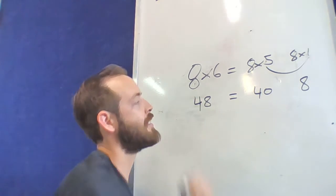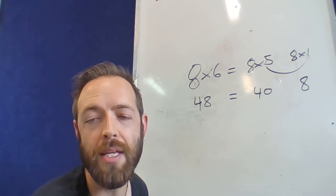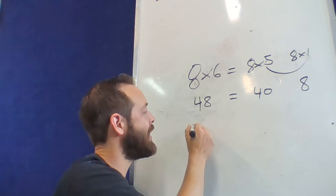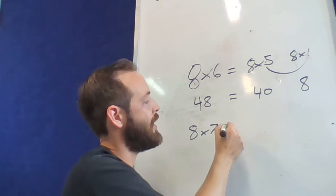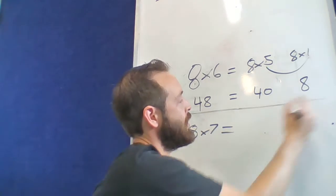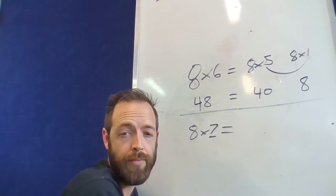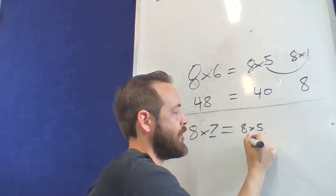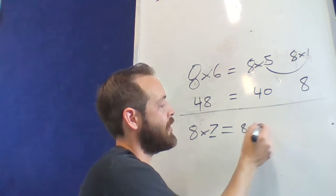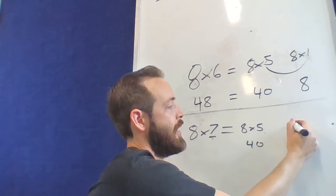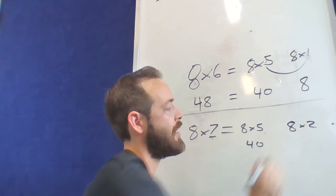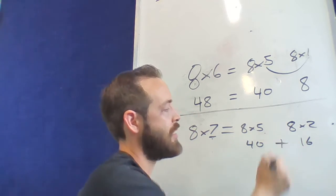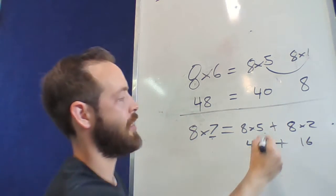Here I've got 8 and I know that 8 times 5 is 40, so altogether I must have 48. If it was 8 times 7, I'd do the same thing — I don't know 7, but I do know 8 times 5 which is 40, and I can just add another 2 lots: 8 times 2 is 16.